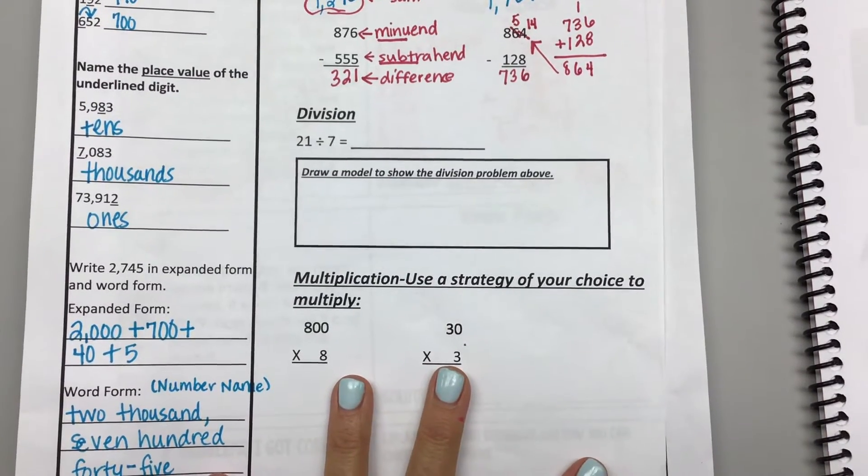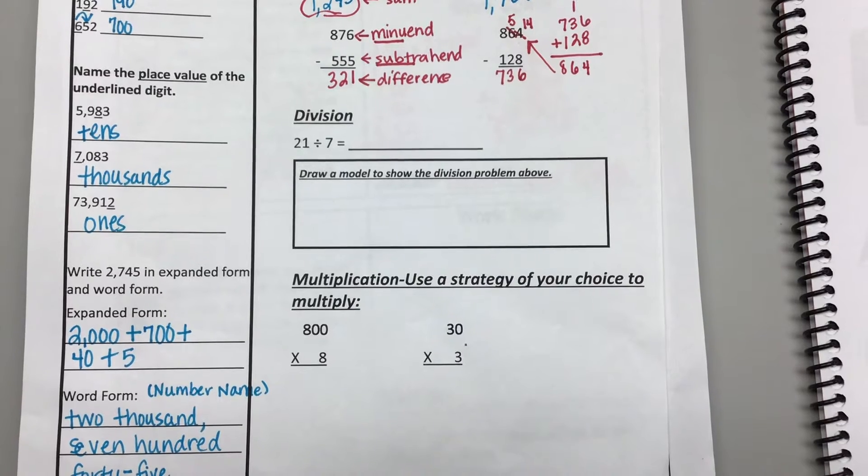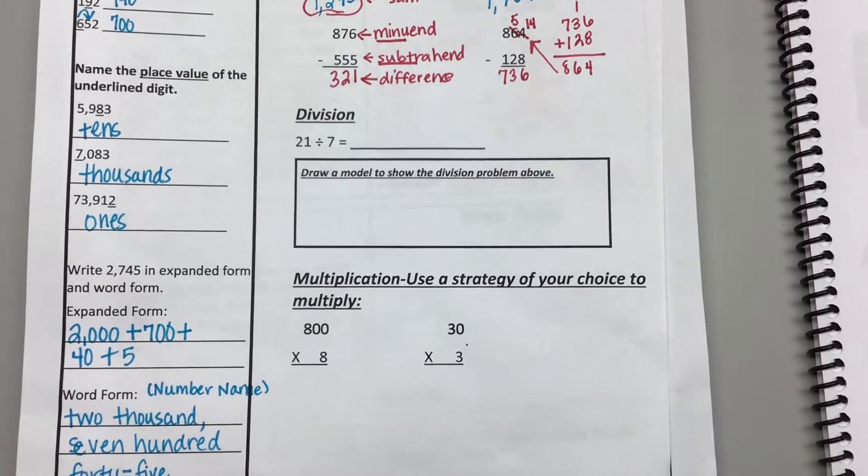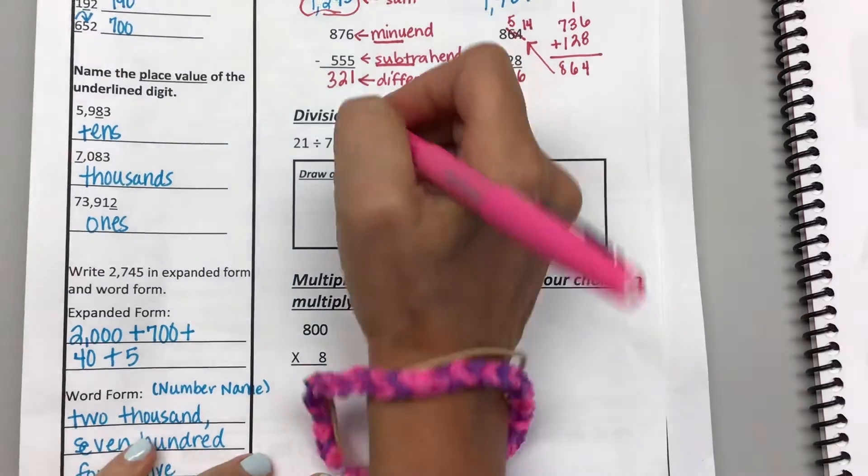Okay, so this problem here, 21 divided by 7. Raise your hand if you know what 21 divided by 7 is. Okay, division facts are a little bit trickier than multiplication facts. We haven't worked on them nearly as much, but 21 divided by 7... Dane? 3.